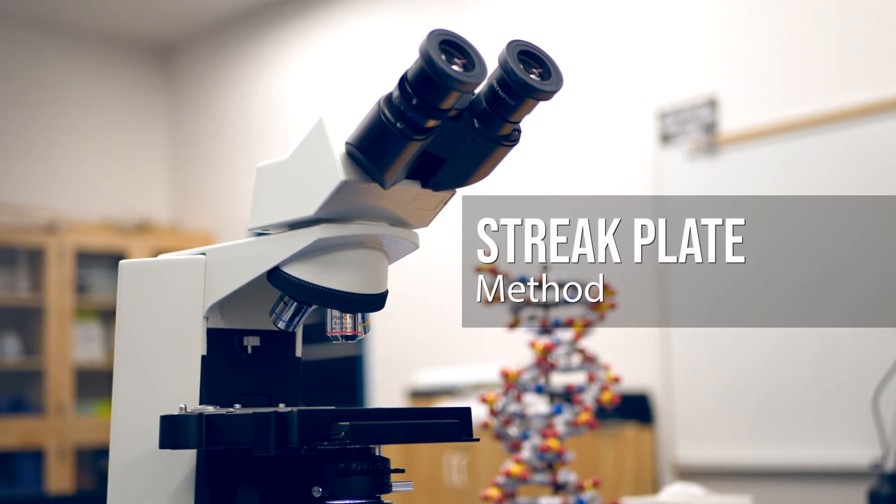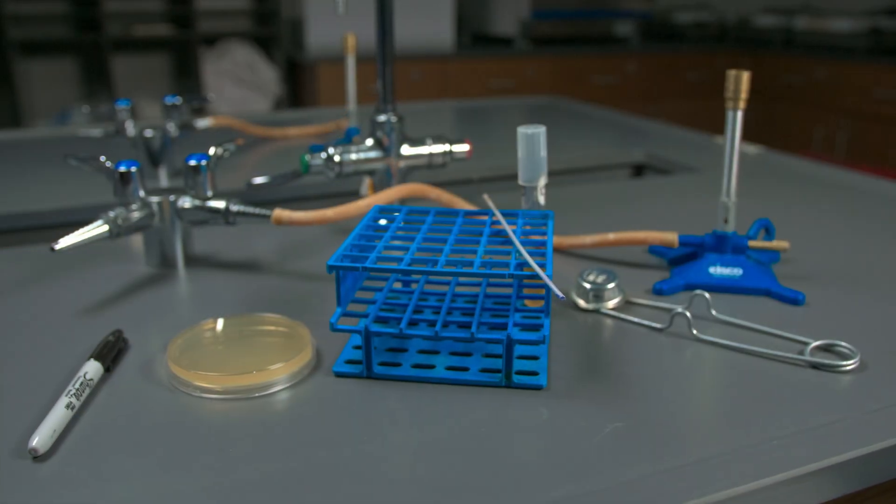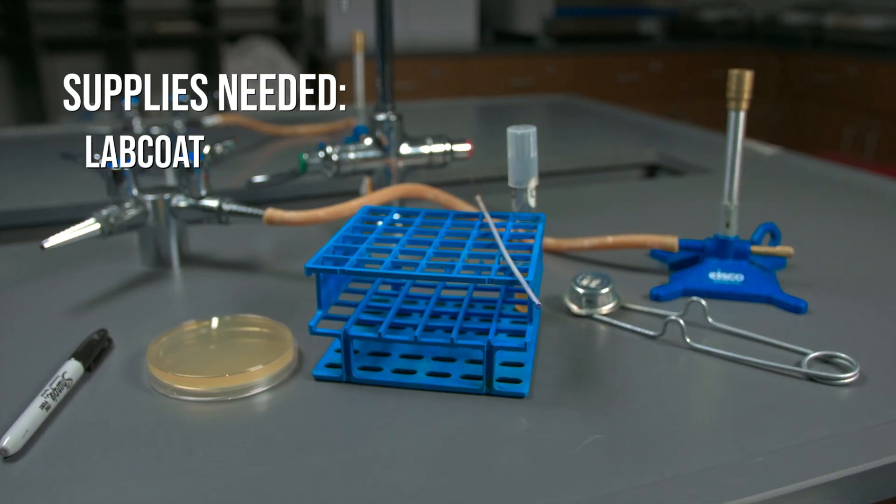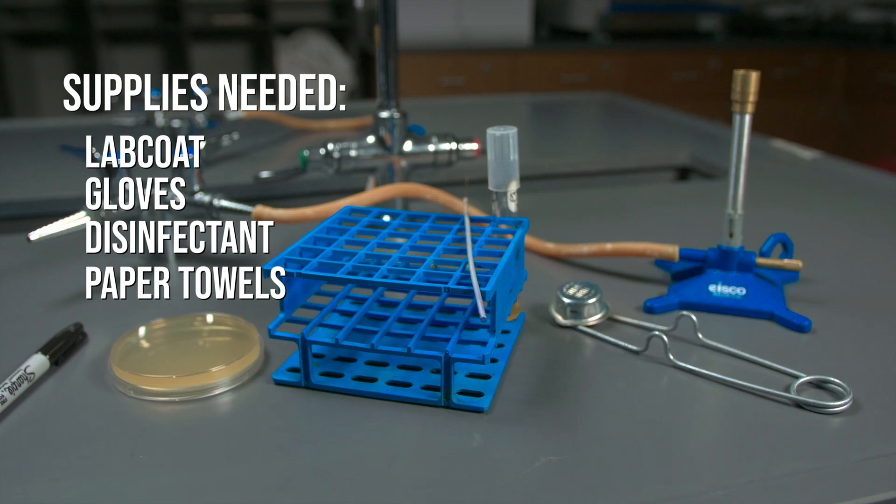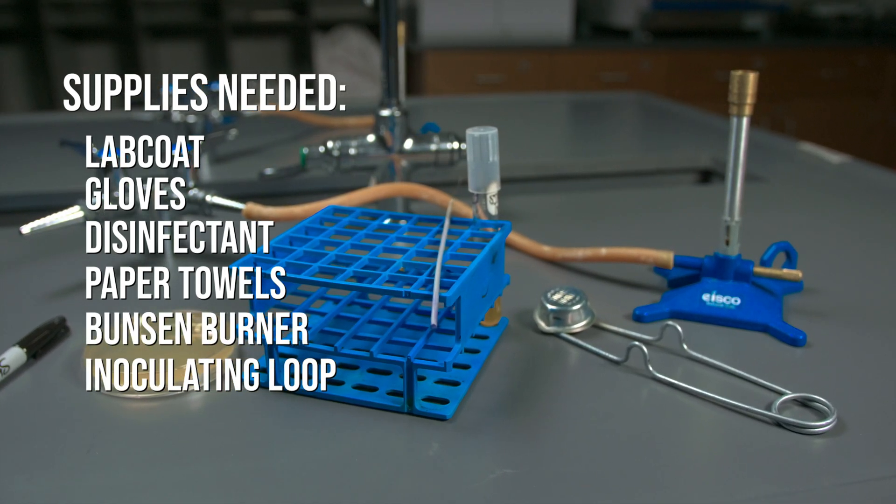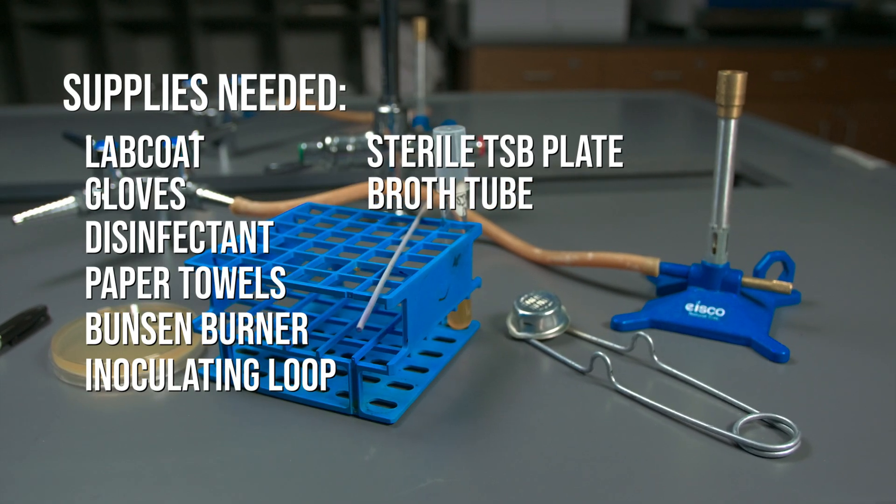In this video we will cover how to do the streak plate method. The supplies you will need are a lab coat, gloves, disinfectant, paper towels, a Bunsen burner, an inoculating loop, a sterile TSB plate, and a broth tube containing bacteria.